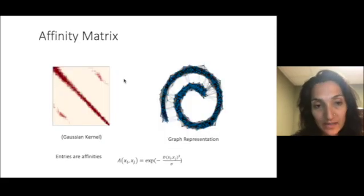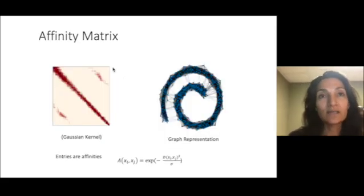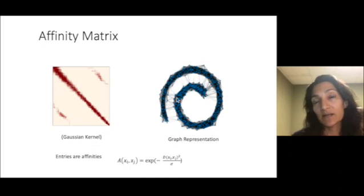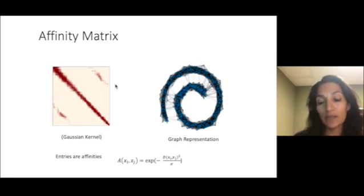When we convert this to an affinity matrix, some of the sidebands go away, but some of the connections there remain. The graph is still a little bit noisy with connections that are cutting across the manifold rather than staying within it.